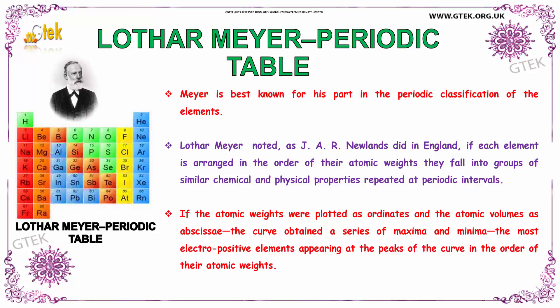If the atomic weights were plotted as ordinates and the volume as abscissa, the curve obtained a series of maxima and minima, with the most electropositive elements appearing at the peaks of the curve in the order of their atomic weights.